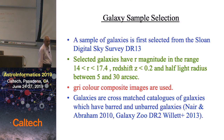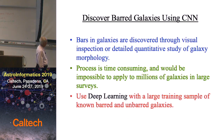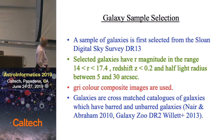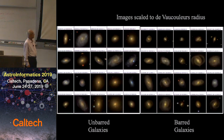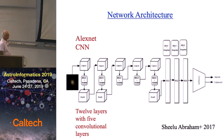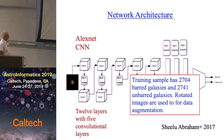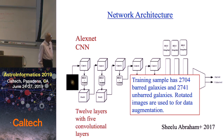We have about 2,000 barred and 2,000 unbarred galaxies. We take the SDSS galaxies, cross-match them with the Nair and Abraham catalogue and the Galaxy Zoo catalogue, giving us our two fully labelled catalogues. We then do data augmentation by rotating the galaxies through one degree at a time, getting 360 times the sample size, which goes into the training.